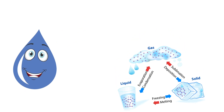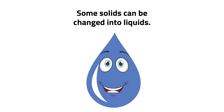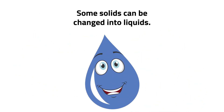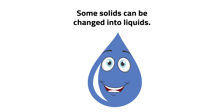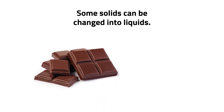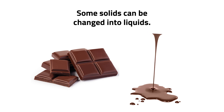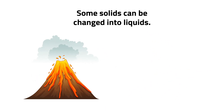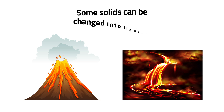Some solids can be changed into liquids. Examples of solids that turn into liquids are chocolates. Chocolates will melt when left in a hot place. Rocks in volcanoes, when heated, turn into lava.